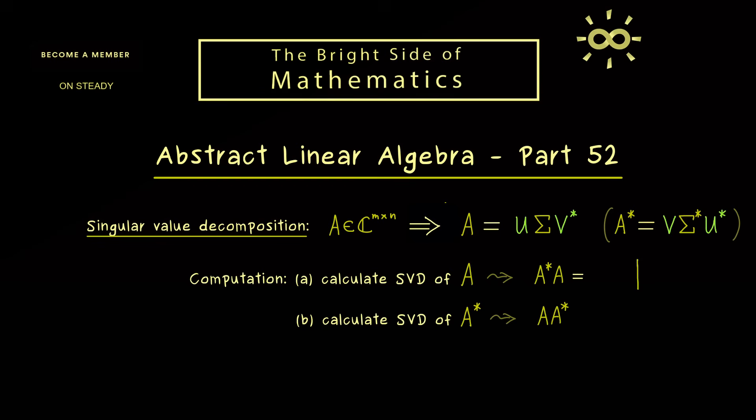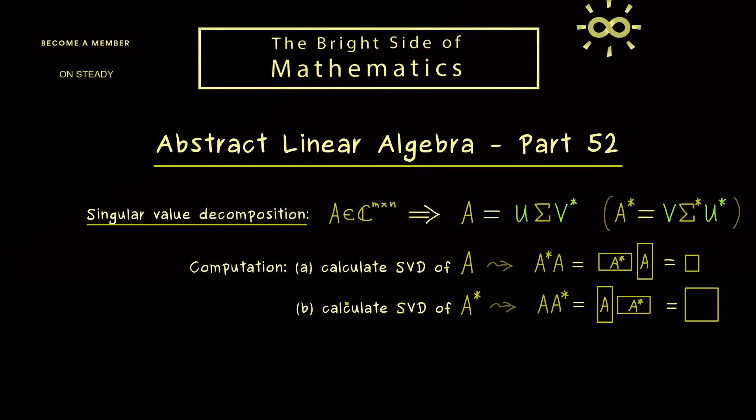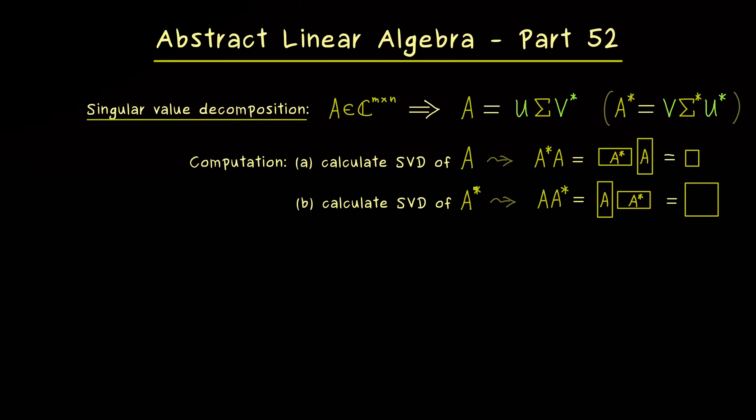For example, if A has such an upright rectangular form, then A star would lie down. Which implies that the resulting matrix product is a square matrix of this size. On the other hand, if you exchange the order, you also get out a square matrix, but this one is bigger. Therefore for calculation purposes, it would be easier to work with the smaller matrix. Hence the usual efficient way is to first look at the shape of A, and then to decide which path to go. So please keep that in mind whenever you have to solve such an explicit problem.